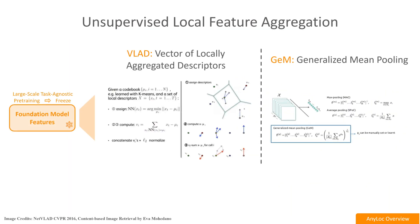Once we extract these per-pixel ViT features, we apply several unsupervised local feature aggregation methods like VLAD and GEM. These aggregation methods convert the per-pixel visual and semantic descriptors into place-level descriptors useful for VPR.